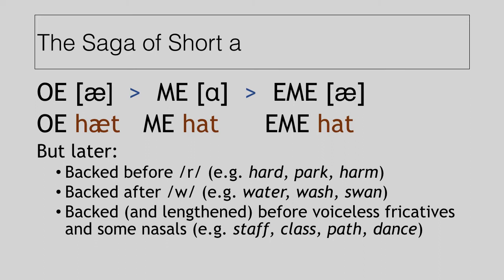And finally, that short A was backed and also lengthened a little bit when it appeared before voiceless fricatives and before some nasal consonants. So staff and class and path and dance come to be pronounced stɑff and clɑss and pɑth and dɑnce. And as you can probably tell from my pronunciation, that's not the normal American way of saying those words. That is the sort of standard British English way. So this is actually a change that happened not to all dialects in English, but only some of them.